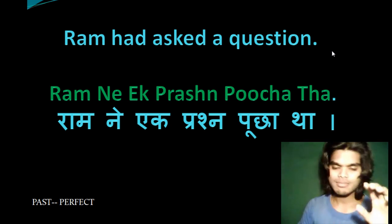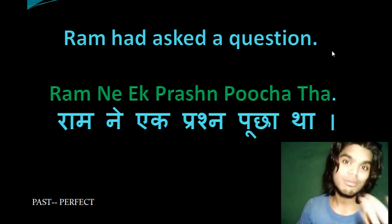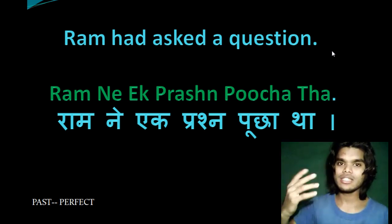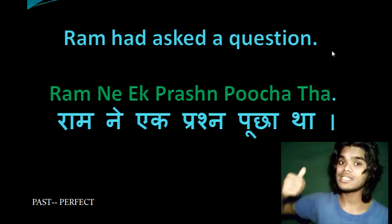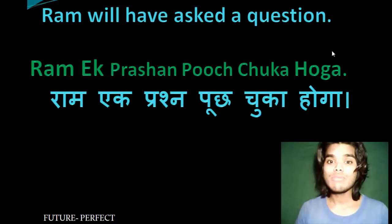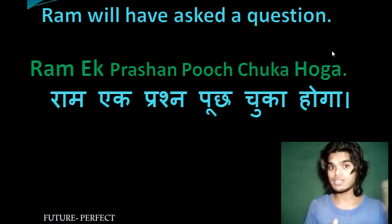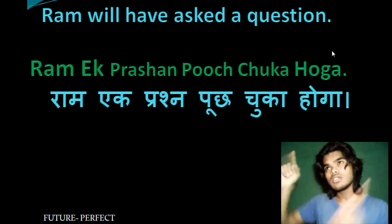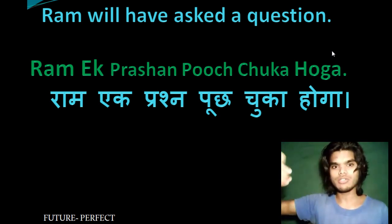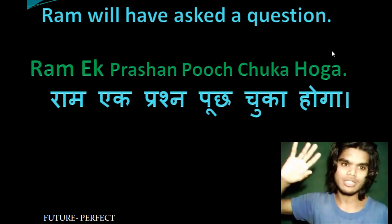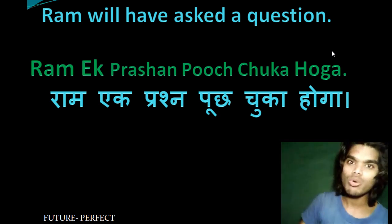You determine the meaning of 'kal' from the verb form — if it's 'kal aaya' it's past, if it's 'kal aaunga' it's future. For future perfect: 'Ram ek prasna pooch chuka hoga' — Ram will have asked a question by a certain time tomorrow. It's a prediction or probability. So 'Ram ne ek prasna pooch chuka hoga' represents the future perfect.